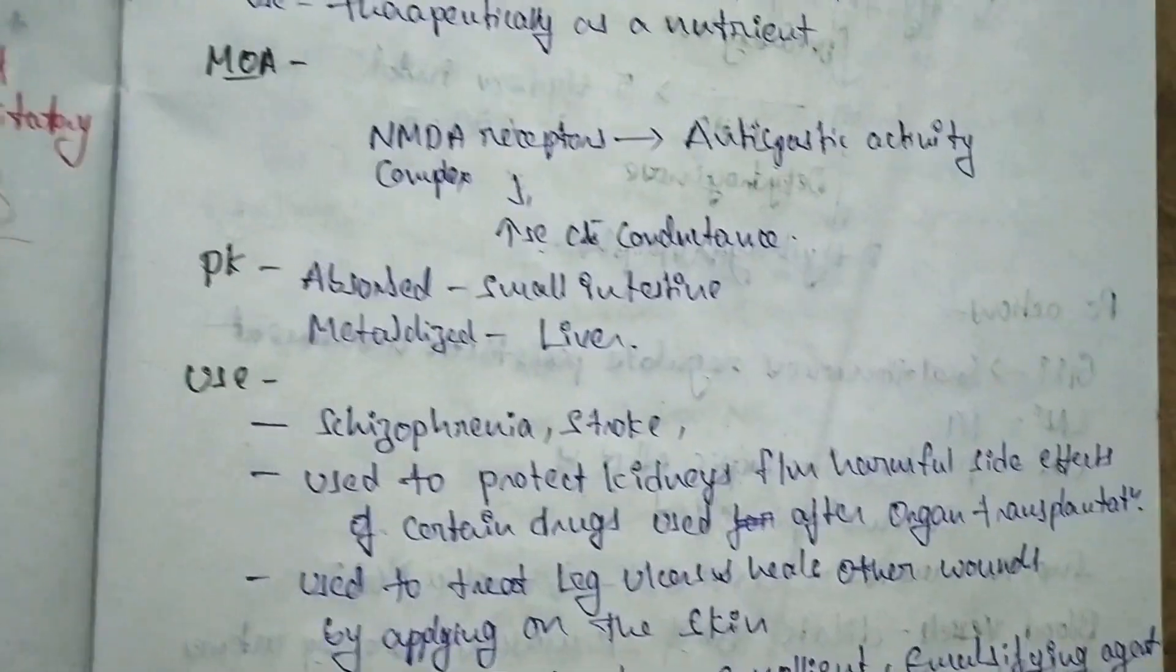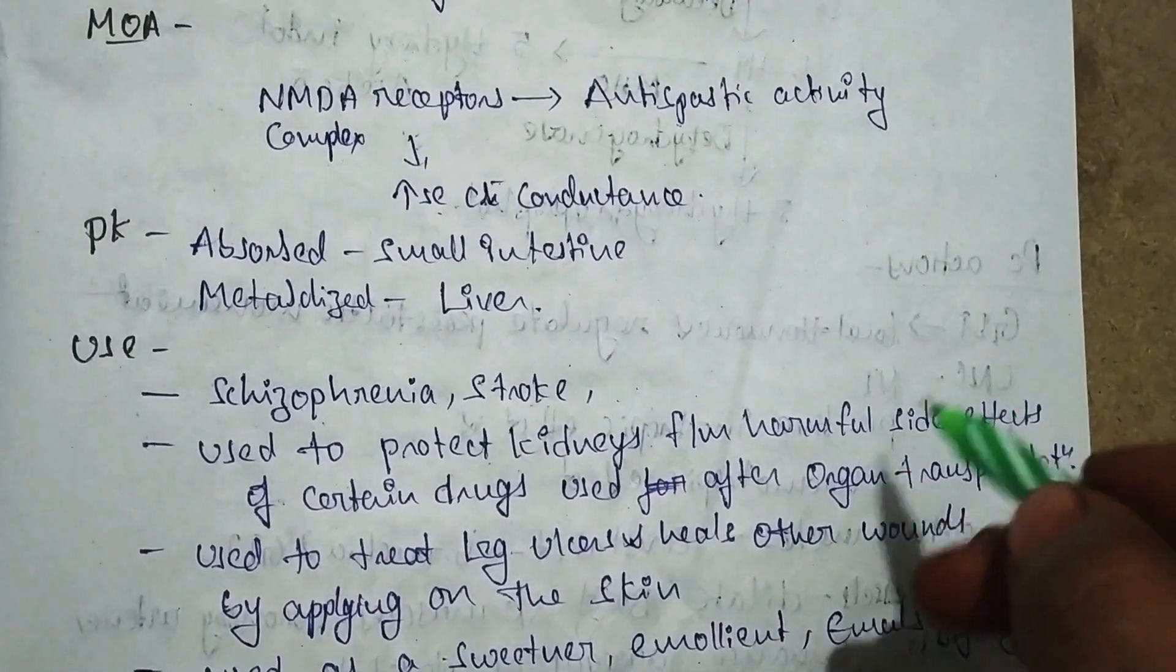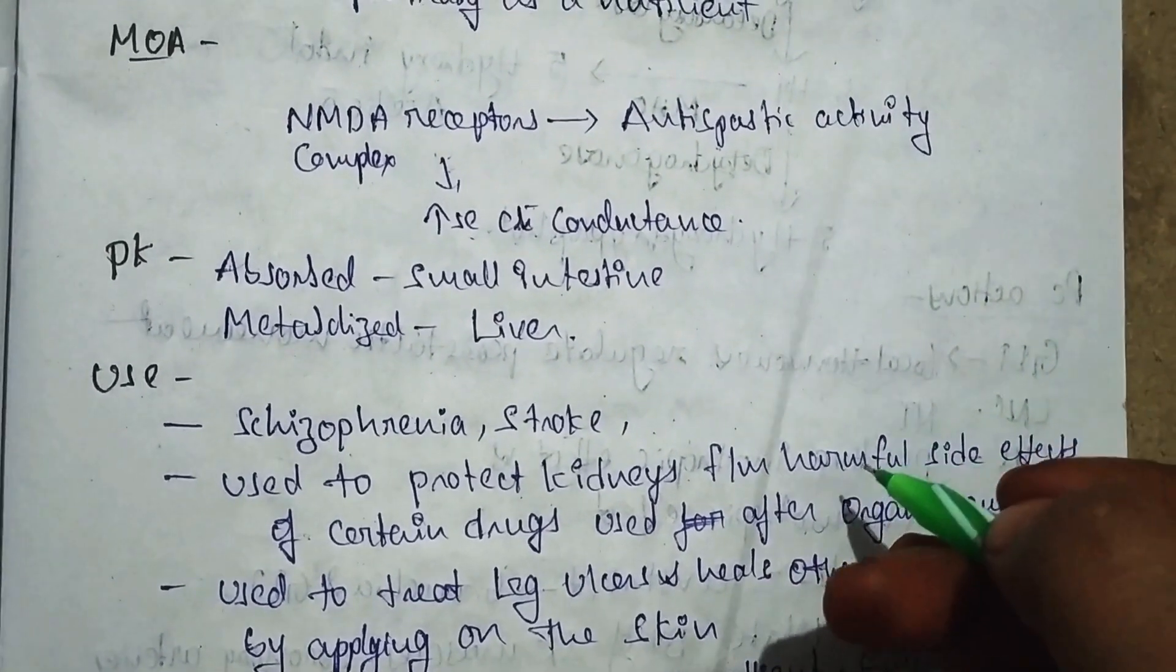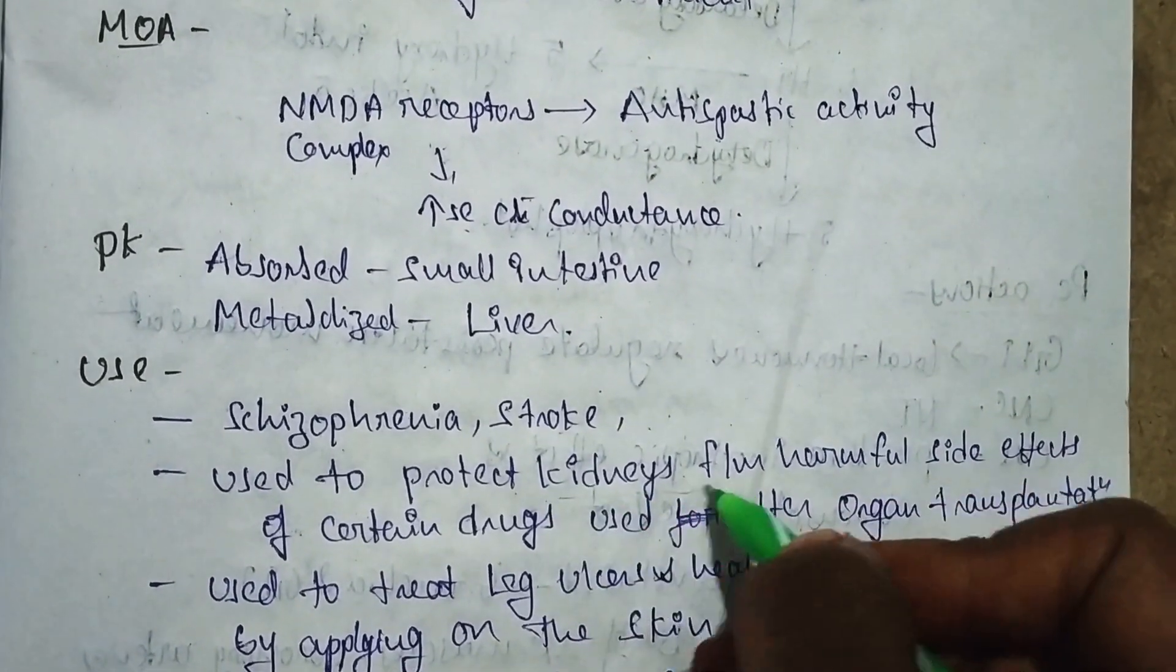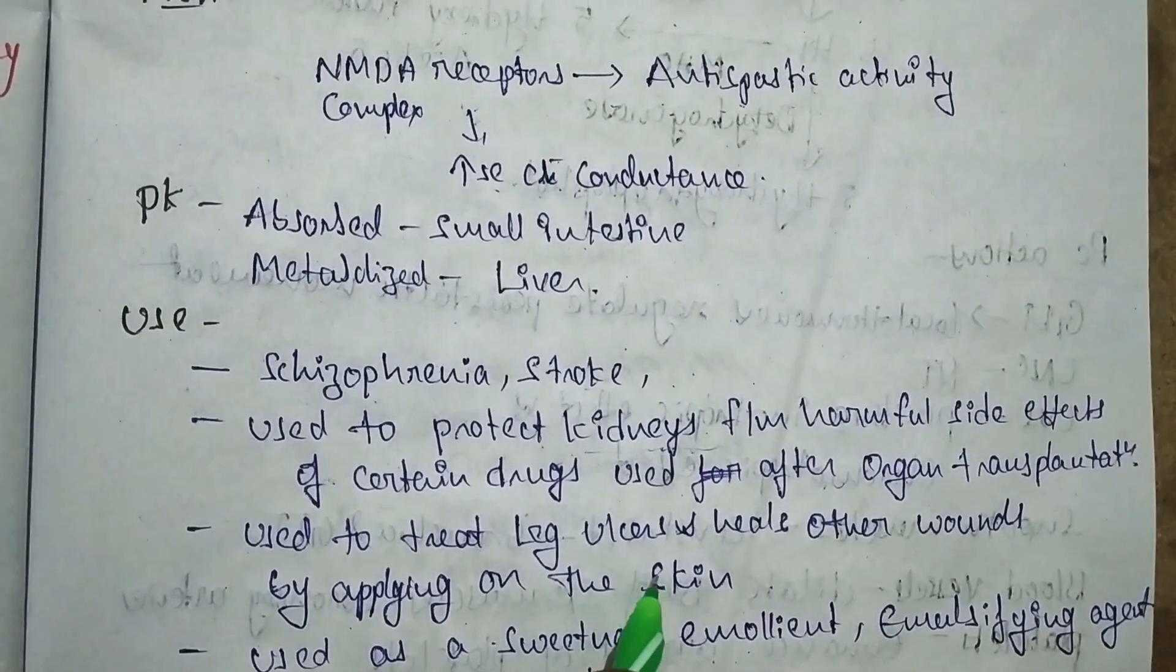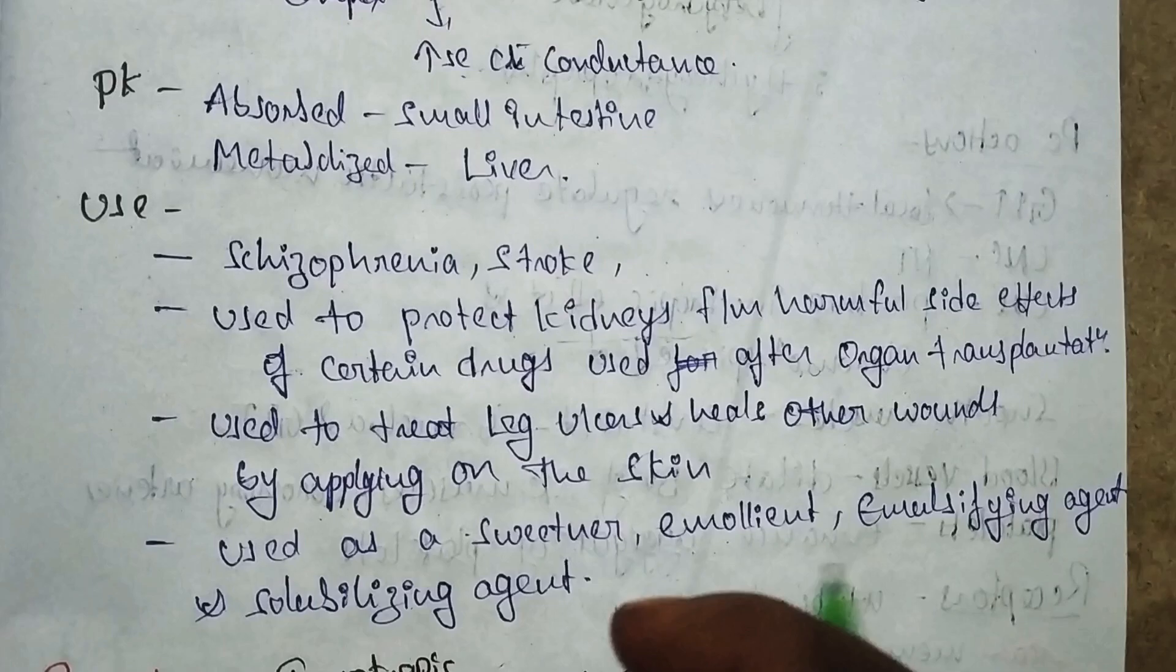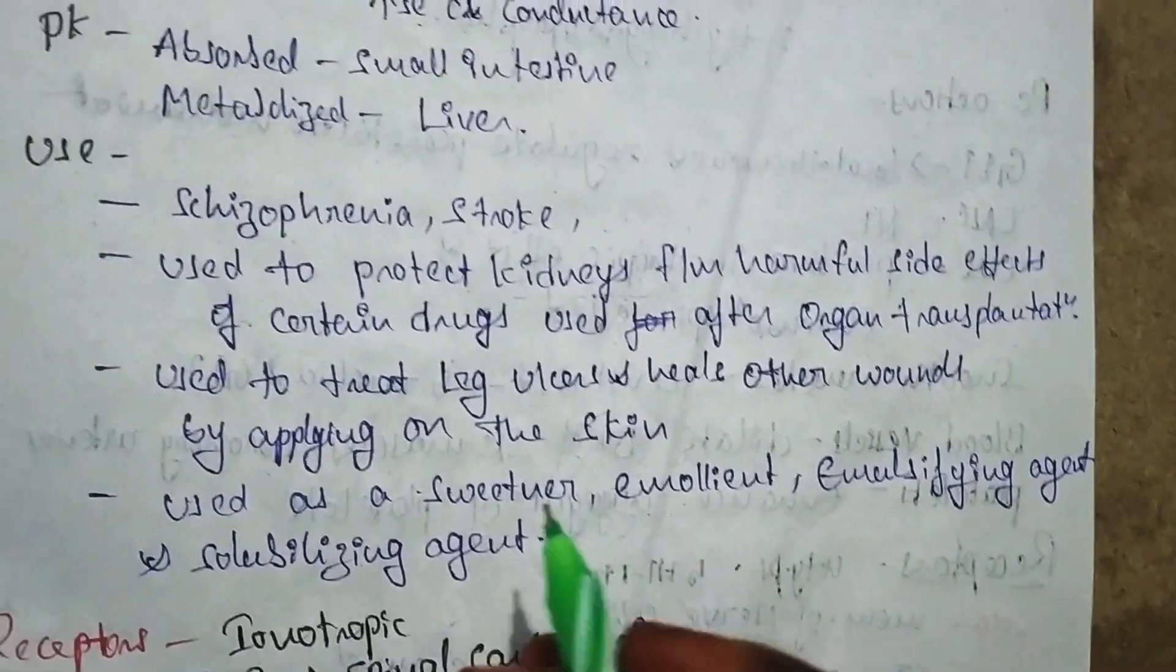Glycine uses include treatment for schizophrenia disorder and stroke, and it protects the kidneys from harmful side effects when using certain drugs. After organ transplantation, it is used for kidney filtration problems. It is used to treat leg ulcers and heal other wounds by applying on the skin. It is also used as a sweetener, emollient, emulsifying agent, and solubilizing agent.